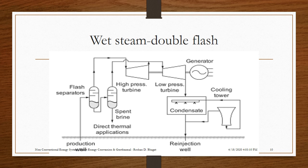The figure shows the wet steam double flash arrangement. Two turbines are used — one high pressure and one low pressure. Both high and low pressure steam are effectively utilized in this system. The remaining parts are the same as described in the earlier slide.